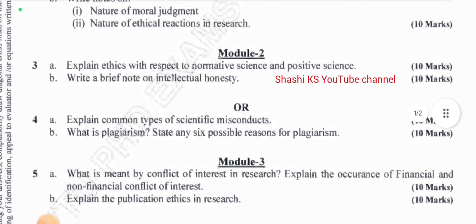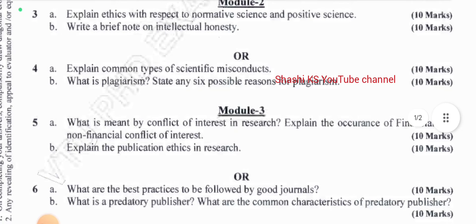In Module 3: what is meant by conflict of interest in research? Explain the occurrence of financial and non-financial conflict of interest — this was asked for 10 marks. Explain publication ethics in research — also 10 marks. The or-choice was: what are the best practices to be followed by good journals, for 10 marks; and what is a predatory publisher and what are the common characteristics of predatory publishers, for 10 marks.